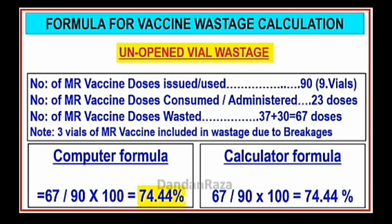Calculator formula: 67 divided by 90, multiplied by 100, is equal to 74.44.